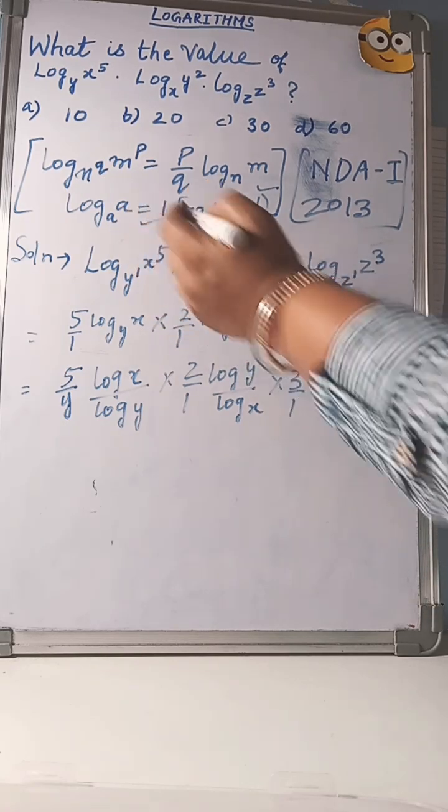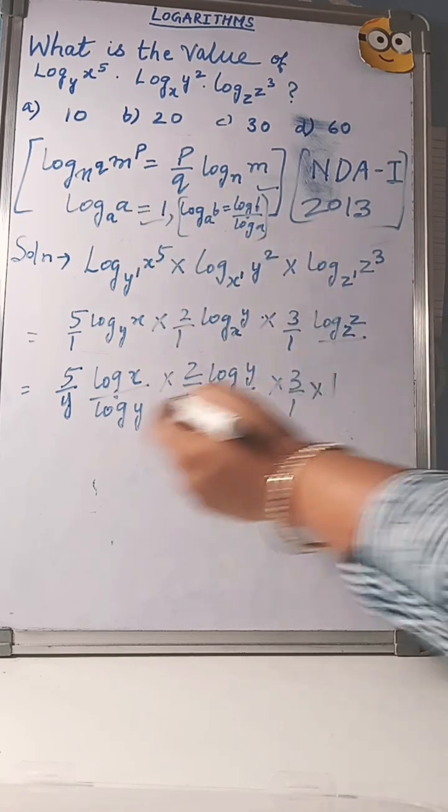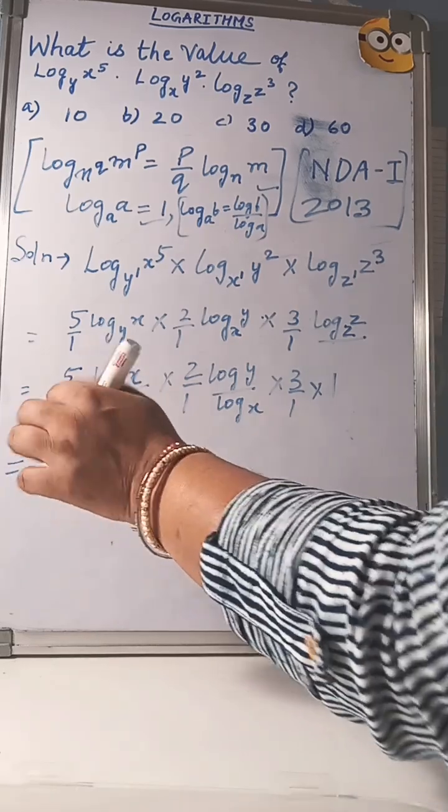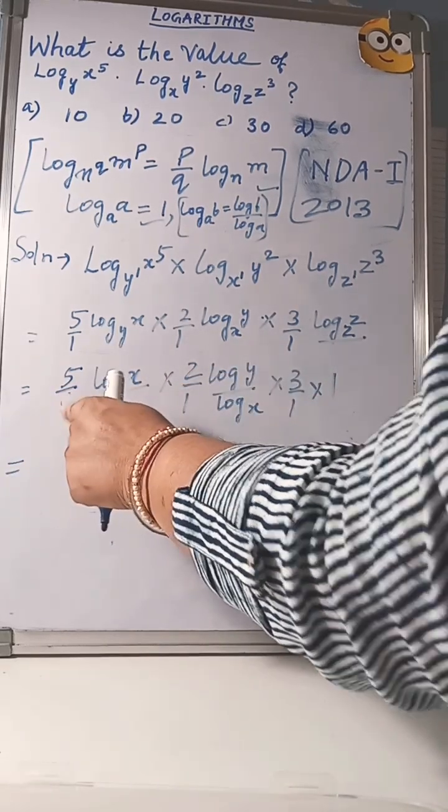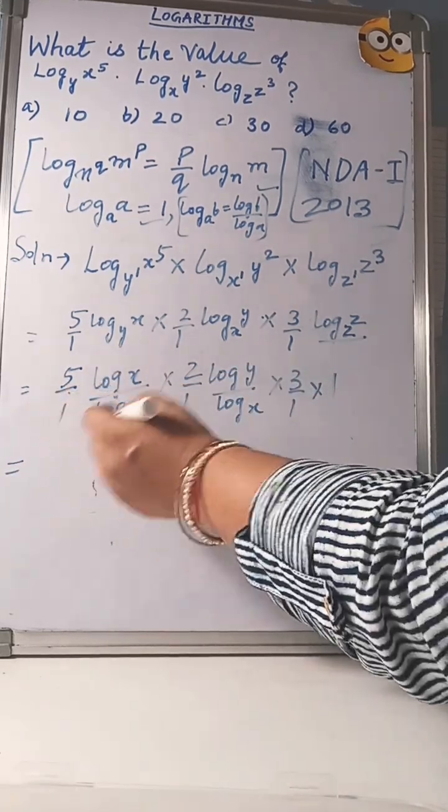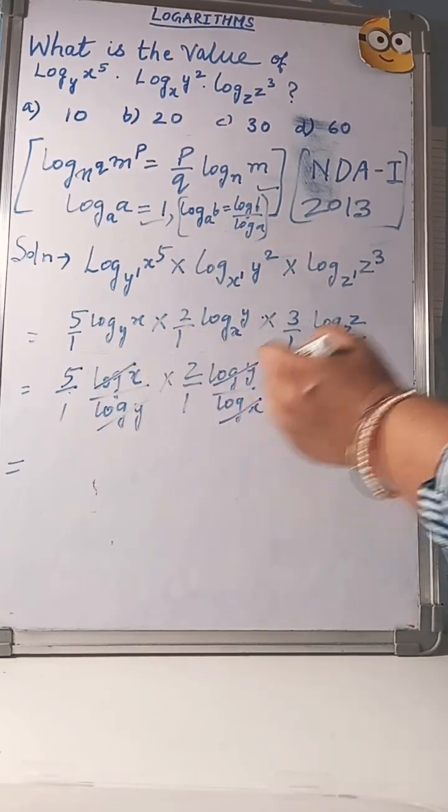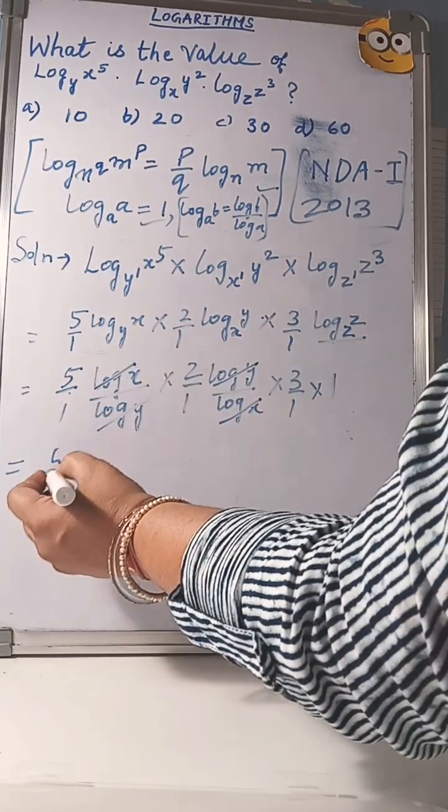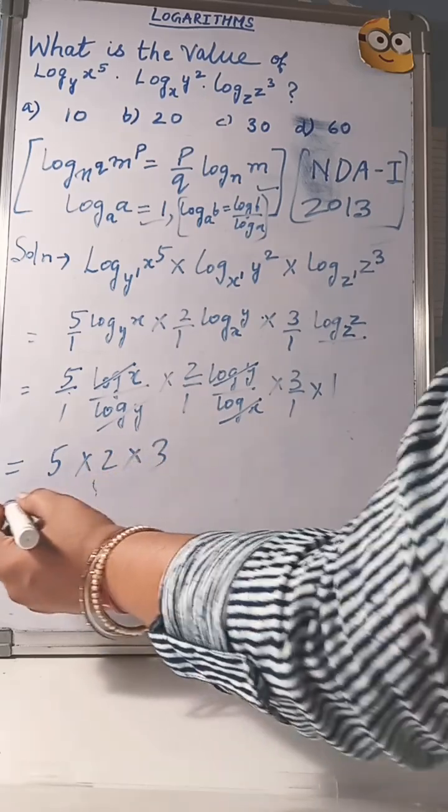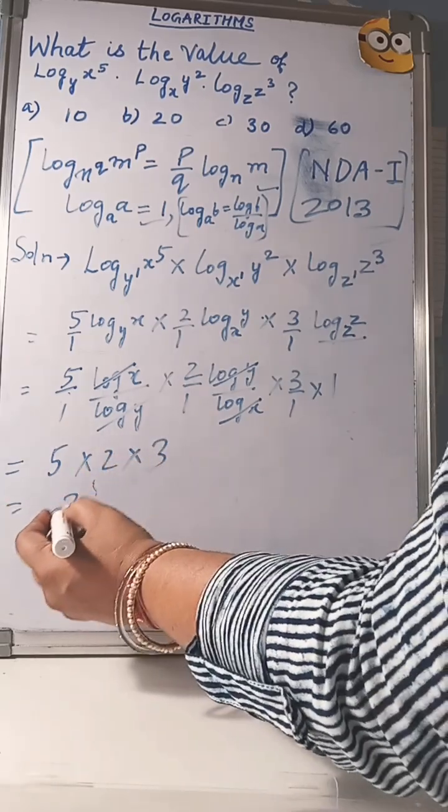And you know it's the same base, then value is 1. Put here 1, and log y and log y cancel, log x and log x cancel. 5 into 2 into 3, 5 times 2 is 10, 10 times 3 is 30. Option c is correct.